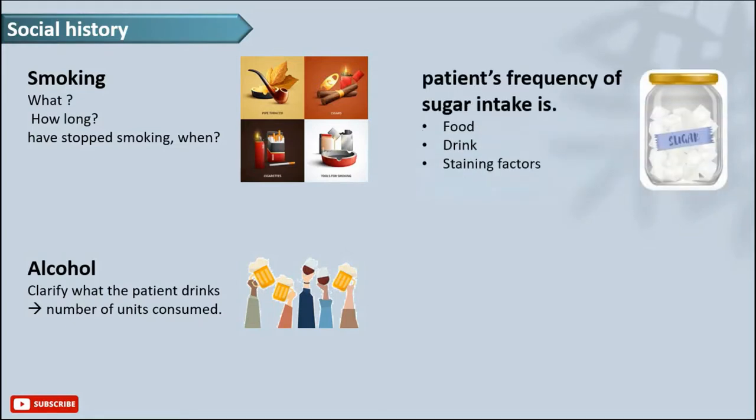Then you ask them about the frequency of sugar intake. The sugar included in their dietary habits whether in the foods or drinks or snacks whatever. This is quite important because it gives you information about the caries and also their carious rate and it will make your patient more aware about what they eat when they know it's going to be analyzed or recorded. Also bear in mind that many different foods or drinks might be staining factors and it will also give you a clue about what to expect when you examine the patient.